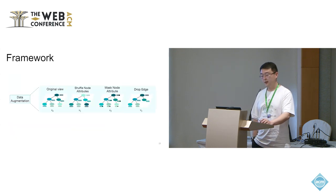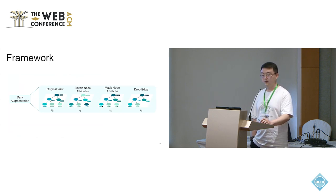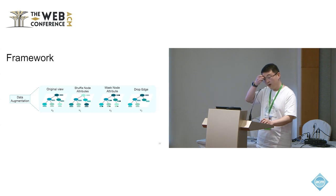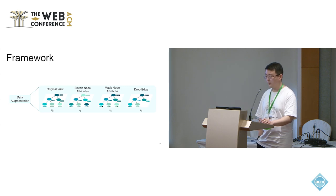To facilitate the auxiliary task, we generate various views by data augmentations. As shown in our slide, we have the original view v0 where v0's structure and attributes remain unchanged. For v1, it's the shuffled node attributes. v1 remains unchanged graph structure, but the attributes of nodes are randomly shuffled. v2 has masked node attributes, where some attributes of nodes are masked, and v3 has dropped edges, where some edges are dropped.